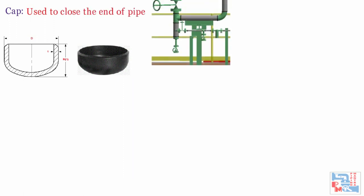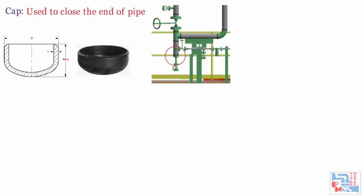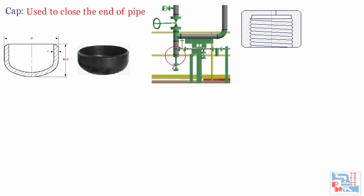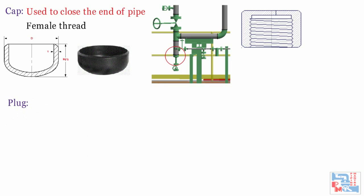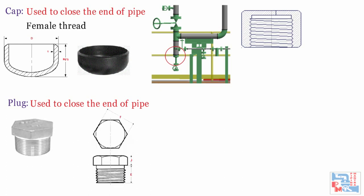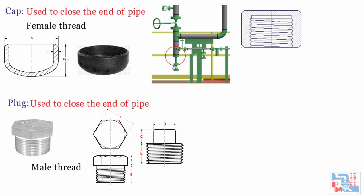Next is the cap, used to close the end of a pipe by butt weld, socket weld, or threaded connection. The cap has a female thread. The plug is another end closure used to close the open end of a pipe component like a half coupling or valve by threaded connection below 2 inches. Plugs have square, hexagonal, and circular heads. In function, a plug is similar to a cap, but a plug has a male threaded end while a cap has a female threaded end.